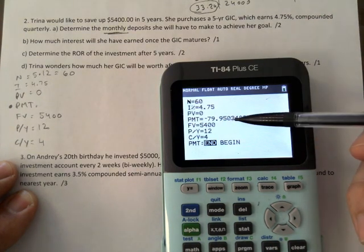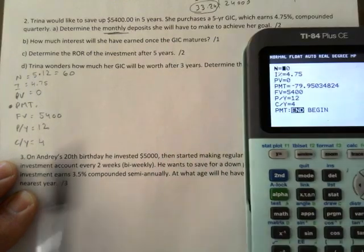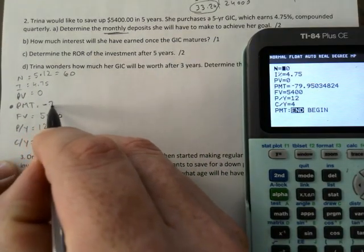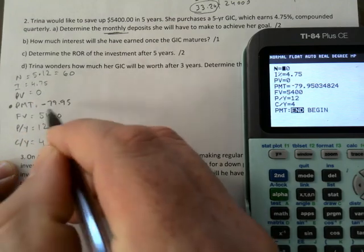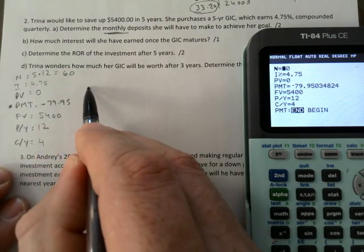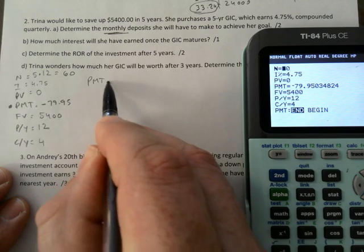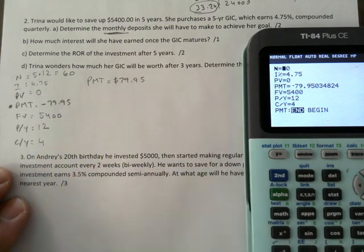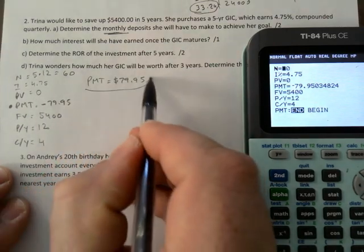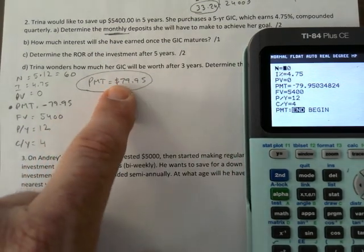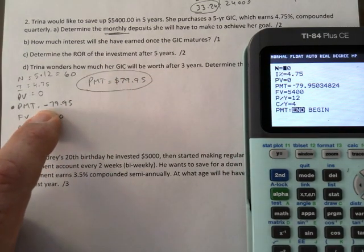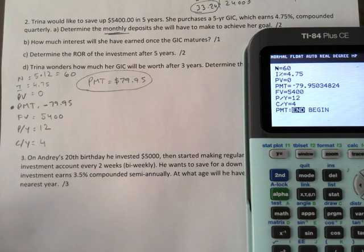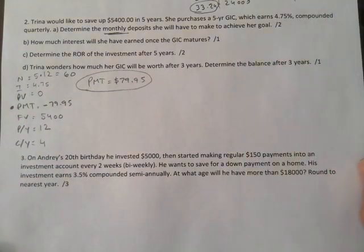$79.95 is your payment. Whatever payment you get, if you make one mistake we'll still give you one out of two. The payment is $79.95 and it makes sense that it's negative because it's going away from you. Make sure you have a dollar sign.